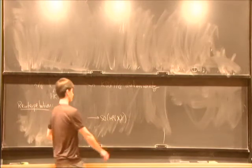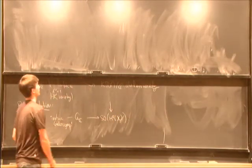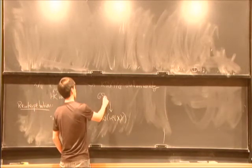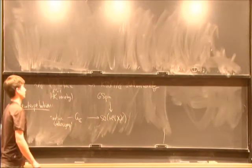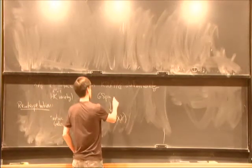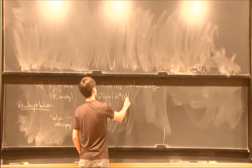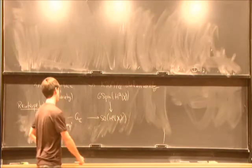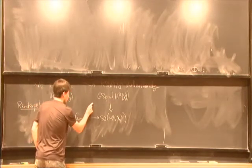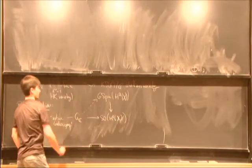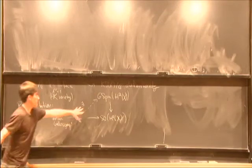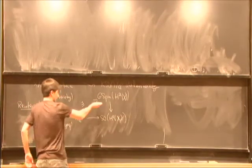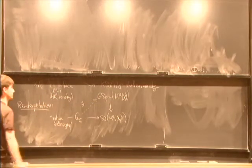In that picture, one way of thinking about the Kuga-Satake construction, and this is where lifting projective representations will come in, is that there's a central torus quotient down to this orthogonal group. G-spin is just spin where you extend the center to be a torus. And this construction is basically implied by the statement that there is a lifting at the level of maps of the motivic Galois group.